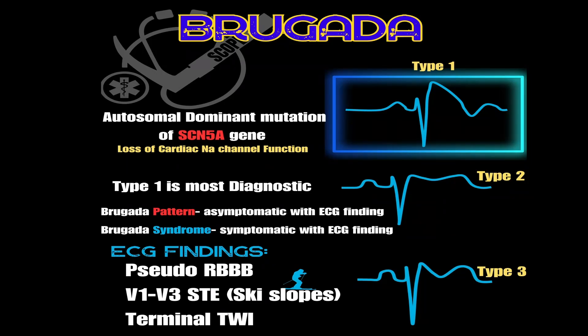Brugada pattern is the typical EKG findings without any symptoms or clinical criteria. Brugada syndrome is the typical EKG findings along with patients who are symptomatic and have one or more clinical criteria. There are three types of Brugada — some studies combine types two and three — but type one is the most diagnostic. That's your coved ST elevation in V1 to V3, most commonly seen in V1 and V2, with a pseudo right bundle branch block and terminal T wave inversions. It's important to know that the EKG finding can be transient and provoked by fevers or certain medications. This patient had Brugada pattern induced by his fever — he did not actually have the syndrome.